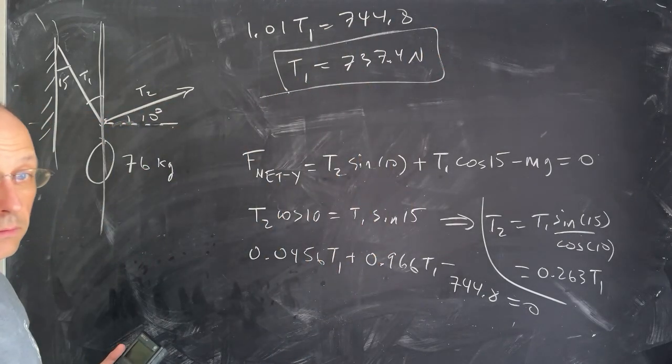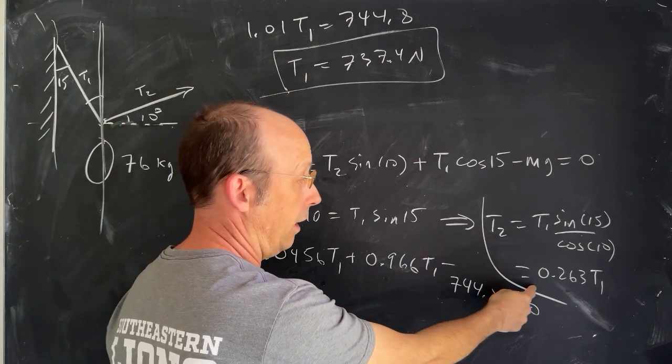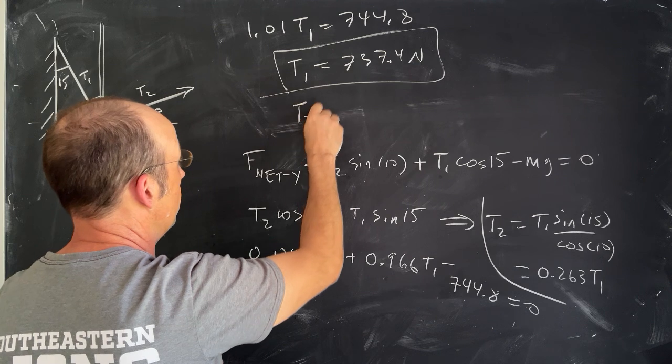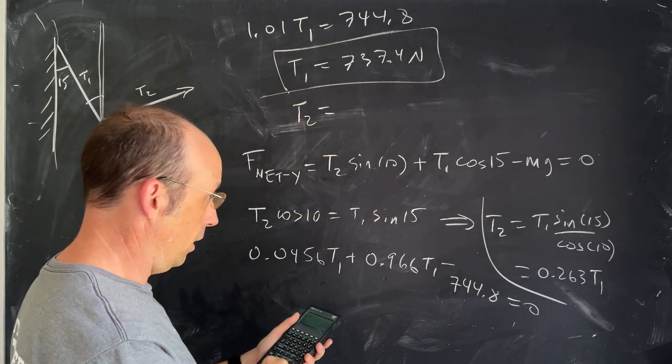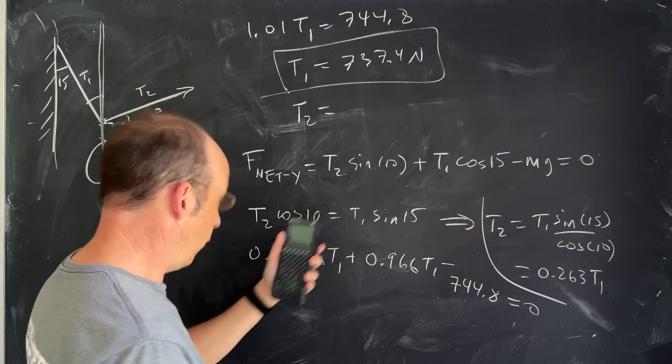So now I have one of the tensions. Now I can find the other one. T2 is 0.263 times T1, so T2 is 0.263 times that, and I get 193.9 newtons.